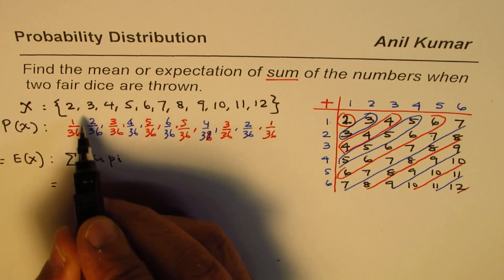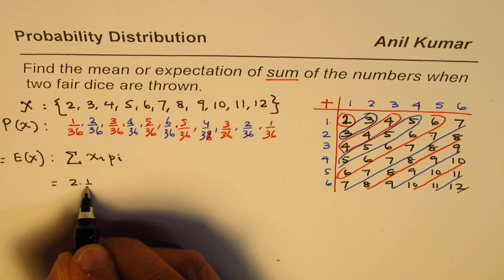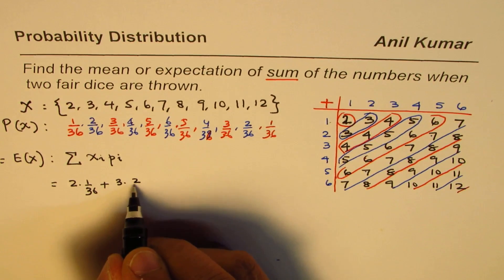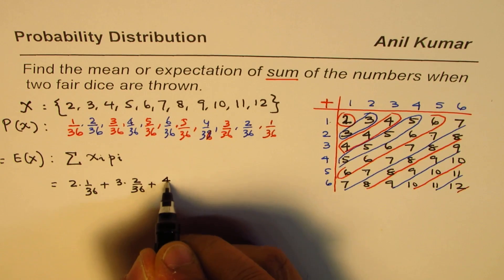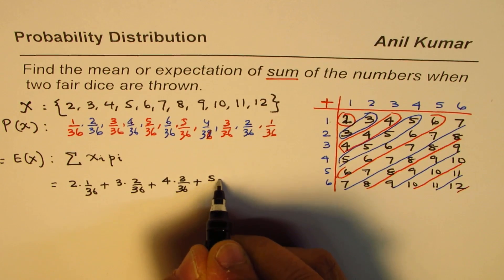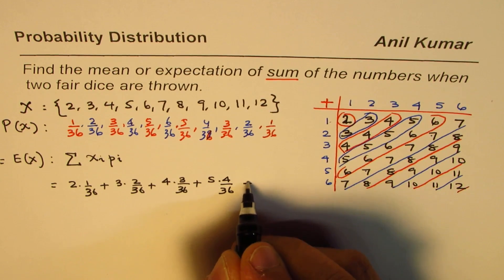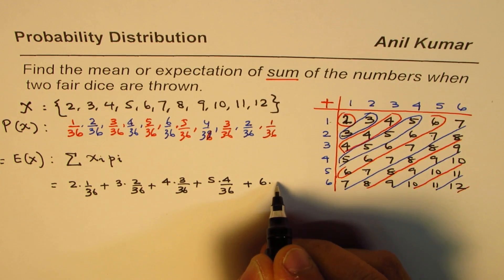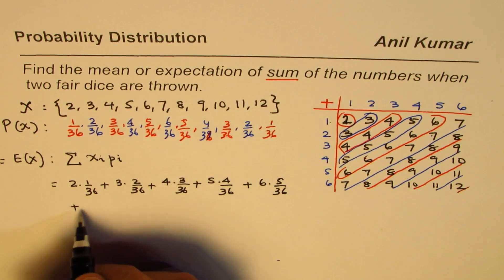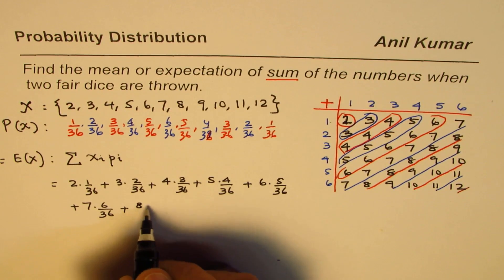So we get 2 times 1/36 plus 3 times 2/36 plus 4 times 3/36 plus 5 times 4/36 plus 6 times 5/36. There is a pattern which you can see.